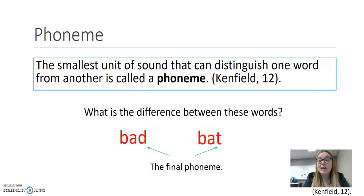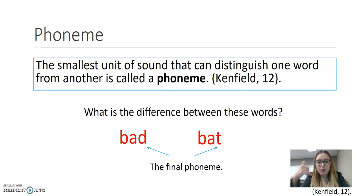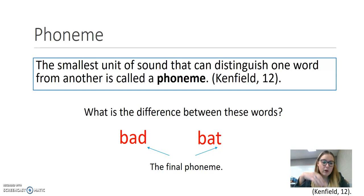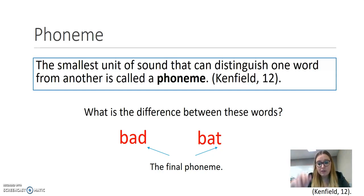We're going to start with the linguistics part, and then in the second video, I'll show you the grammar part. In the linguistics part, we're going to start with a phoneme. When you think of a phone, you're talking through sound, and phonics is the study of word and letter sounds in a language. A phoneme is simply the smallest unit of sound that can distinguish one word from another. For example, in the word 'bad' versus 'bat,' there's one phoneme of difference — the d versus the t.